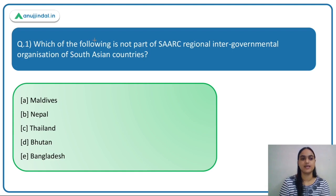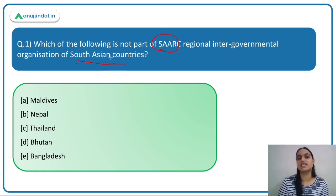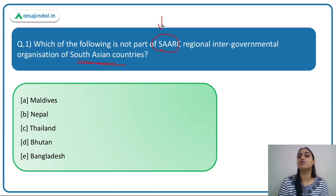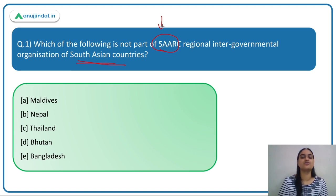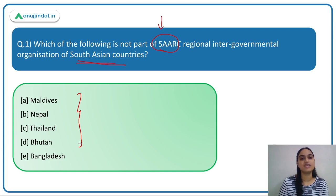The first question asks: which of the following is NOT part of SAARC, the regional intergovernmental organization of South Asian countries? SAARC is an example of regional economic integration, comprising different South Asian countries that have come together to cooperate, remove trade barriers — both tariff and non-tariff — in order to improve relations among nations, handle conflicts, and ensure better growth and development. SAARC is basically comprising eight different countries.